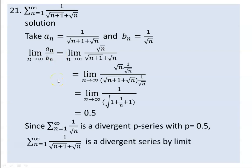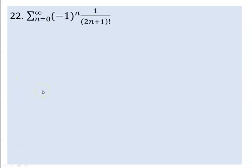The series is divergent by the limit comparison test. The series 1 over root n is a divergent p-series with p = 0.5. Now, the next series is given by minus 1 to the power of n times 1 over 2n plus 1 factorial.